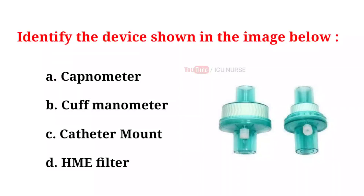Identify the device shown in the image below. A. Capnometer. B. Cuff manometer. C. Catheter mount. D. HME filter. And the correct answer is D. HME filter.